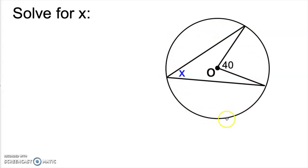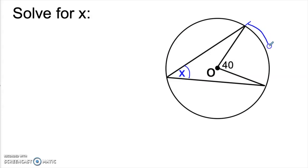Before I show you why that's the case, let me show you a few examples where we can use this relationship to figure out some variables in a circle. Here we have a circle whose center is O, and we're being asked to solve for x. In mathematics, we name circles by their center, so we would call this circle O. The angle x is actually an inscribed angle — it's formed by these two chords — which means that it has to be half of its intercepted arc, or 2x in this case. But that still doesn't tell us what x is.